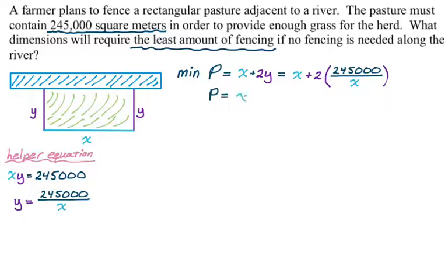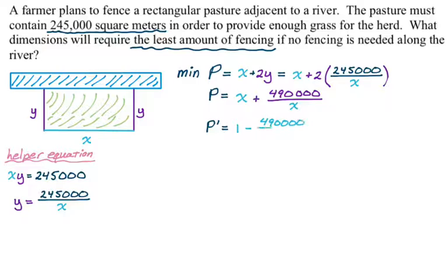Simplifying: x plus 490,000 over x. Taking the derivative — thinking of it as 490,000 times x to the negative first — the derivative is 1 minus 490,000 over x squared. Getting a common denominator makes it easier to set equal to zero and solve. You could also just set it equal to zero and cross-multiply; you'll end up in the same place.